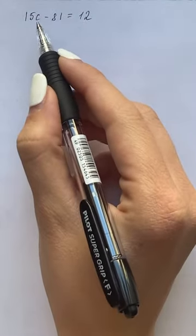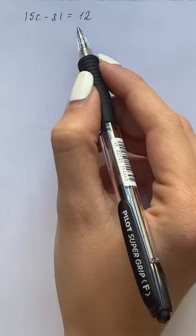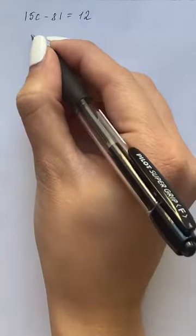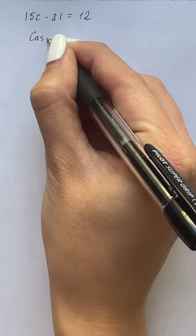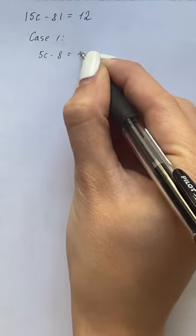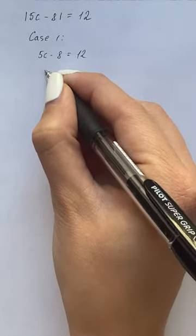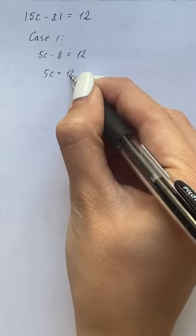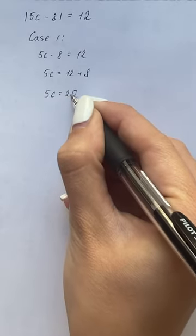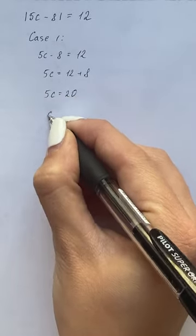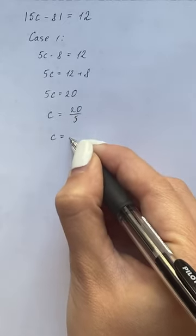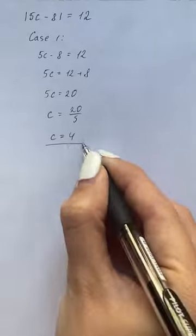We were given that absolute value of 5c minus 8 equals 12. So we will have two cases. In the first case, we have that 5c minus 8 equals 12. So that's going to be 5c equals 12 plus 8, which is 20 on the right hand side. And we get that c equals 20 divided by 5, so c is 4 in the first case.